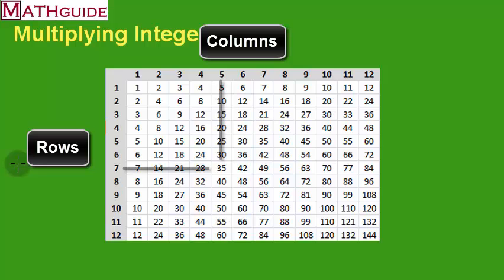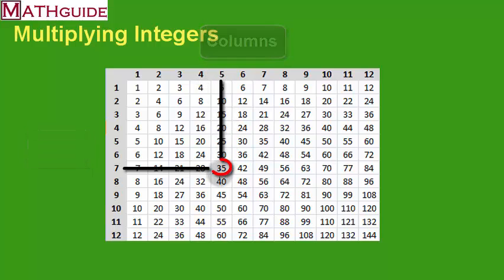For instance, if I wanted to multiply seven times five, I look at seven, I look at five, and I find out where they meet, and it turns out they meet at 35. I'm putting this up here because there are people who have trouble multiplying integers, and usually the biggest problem is they don't have these numbers memorized.